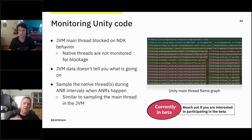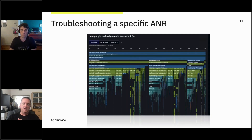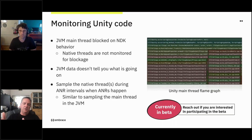We've added a feature to the SDK where we can start monitoring the Unity main thread. Similar to what you saw earlier with flame graphs, we're going to be doing the exact same thing with the Unity main thread. That will give you insight into what was actually happening when you were waiting to pause. All the functionality for this exists in the SDK already — so if you're interested, I would encourage you to reach out and we'll happily set you up as part of that beta.